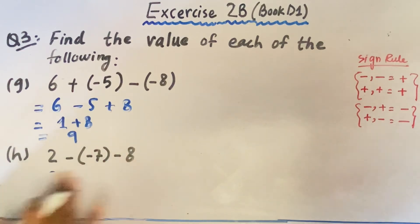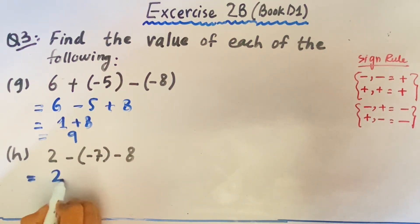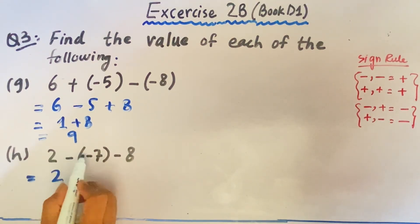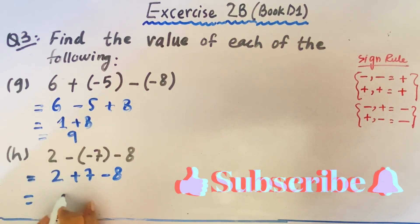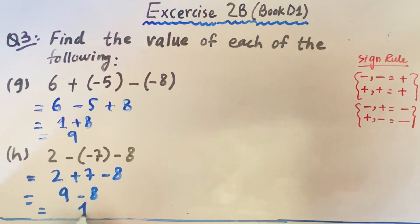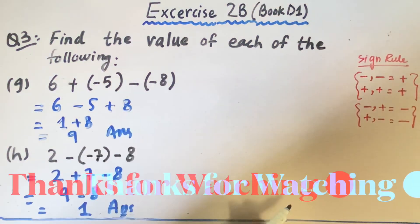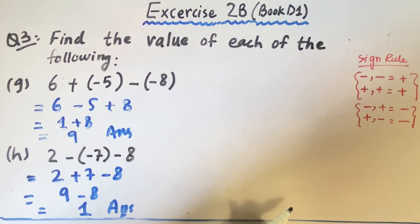In part H, 2 will remain the same, minus minus equals plus 7, and minus 8 remains the same. Then we add them up: 9 minus 8, and the answer will be positive 1. Alright, inshallah we will meet in our next video. Till then, Allah hafiz. Thank you for watching.